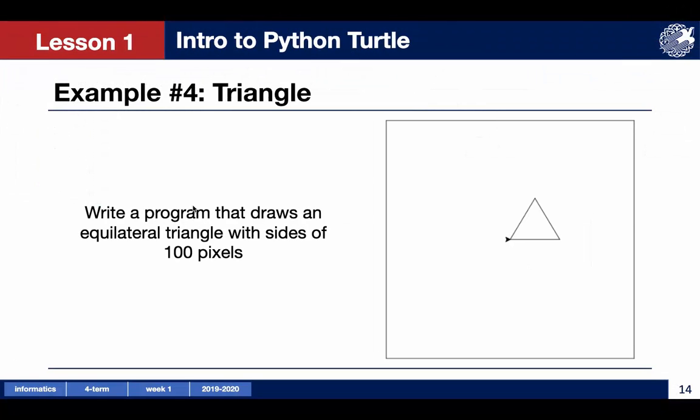In the next example, we must draw an equilateral triangle with a size of 100 pixels. Let's remind that an equilateral triangle is a triangle where every 3 sides are equal and every interior angle between 2 adjacent sides has 60 degrees. It means that every exterior angle has 180 minus 60 degrees, which is 120 degrees.